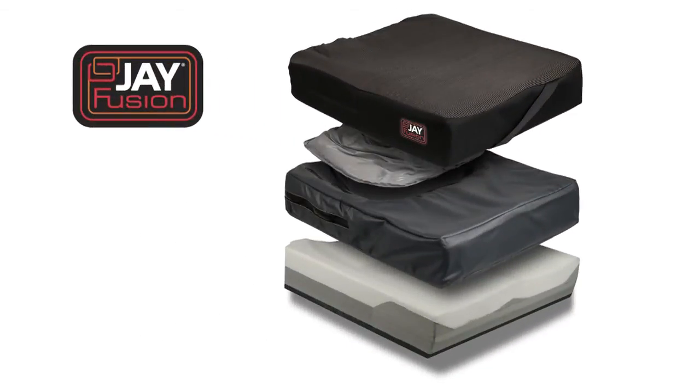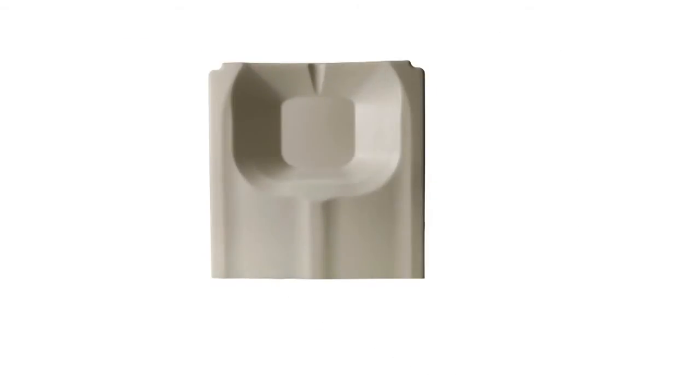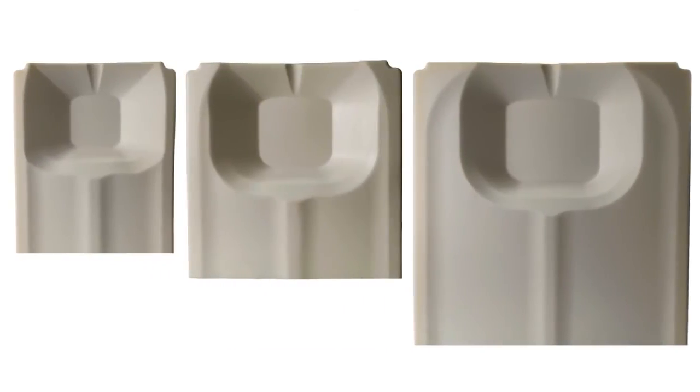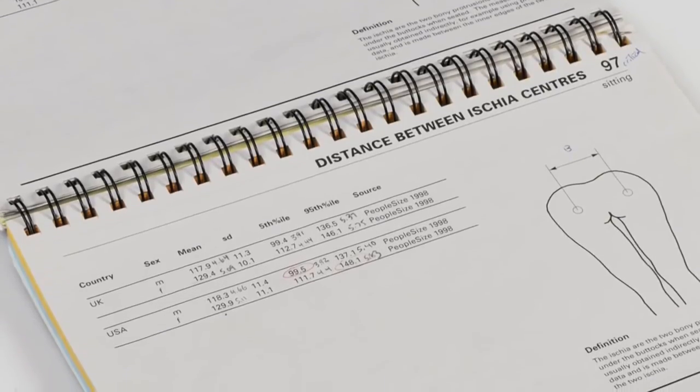The new J fusion cushion combines the advantages of both approaches. Like the J2 deep contour cushion, there is only one PLA size for each cushion width, therefore pelvic measurements are not required. However, they were taken into consideration in the product design.